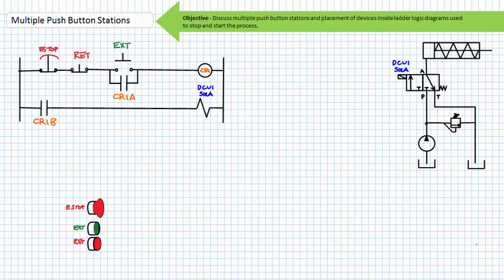This illustrates the logic behind an operator-initiated extension and retraction of a hydraulically extended spring-retracted single-acting cylinder. The ladder logic diagram of this circuit is a repeat of the holding circuit we introduced in the basic ladder logic lecture. Let's review how it functions since an understanding of its function is critical to our current topic. If an operator were to press the extend button, the momentary normally open extend switch would close and via the normally closed e-stop, the normally closed retract, and then the now-closed extend, the coil of control relay one would be energized.